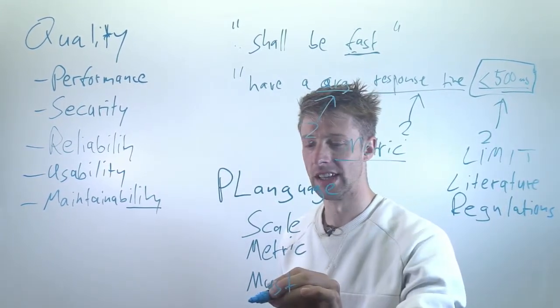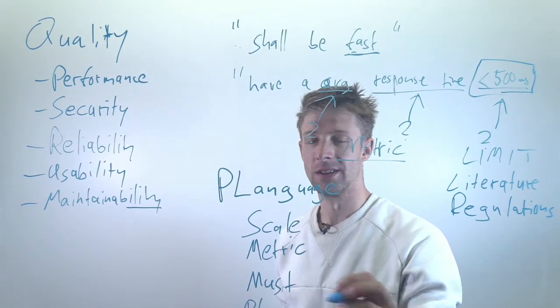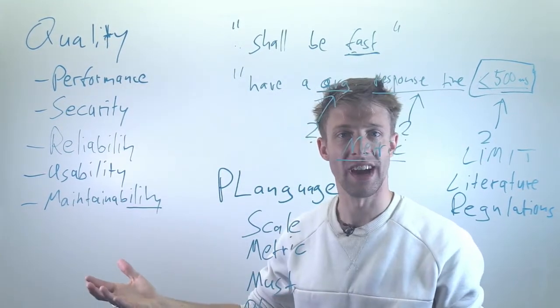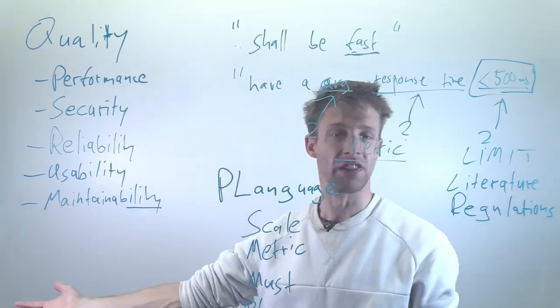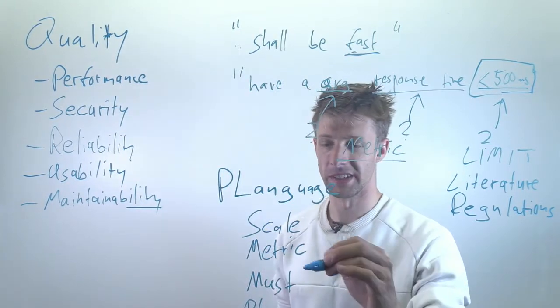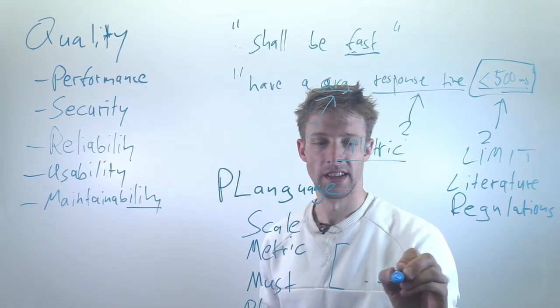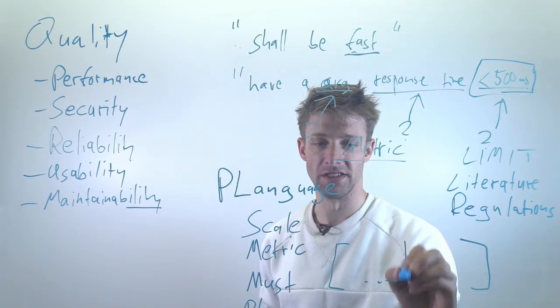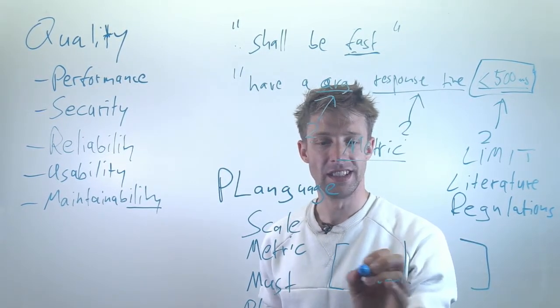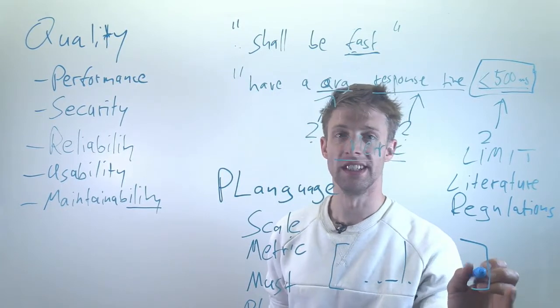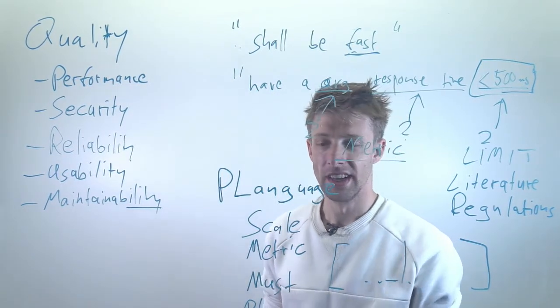That say, okay, it must be at least 500 milliseconds. We plan to have it less than 300. We wish for less than 200, and so on. But then at least you get a range, and you can maybe say, okay, somewhere in this interval we need to be. Ideally we're somewhere on this side, but if we're here, it's still okay.